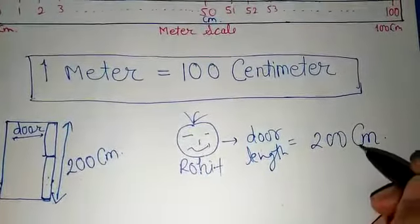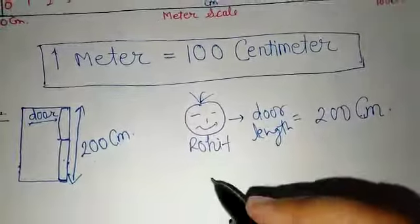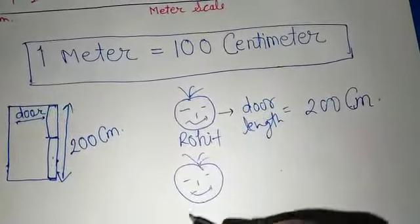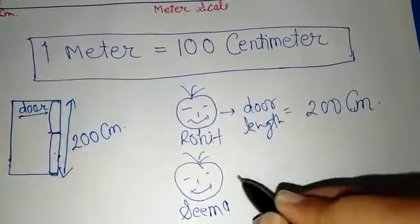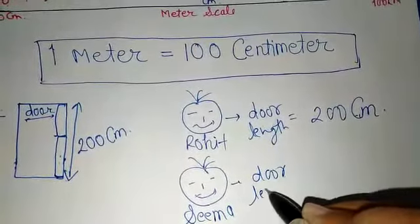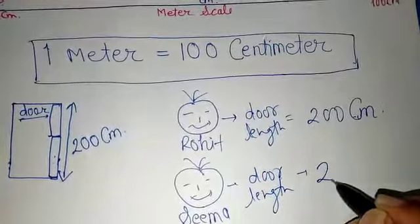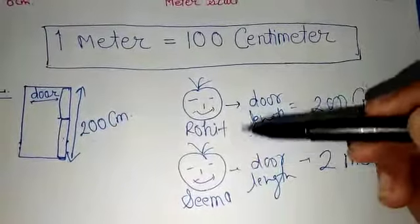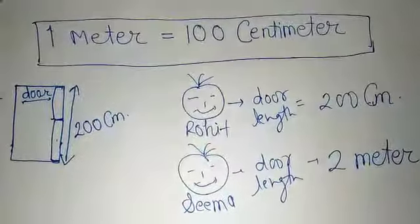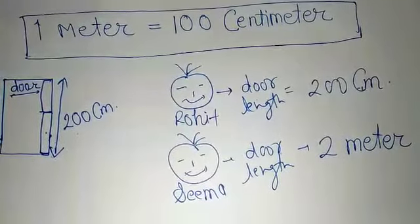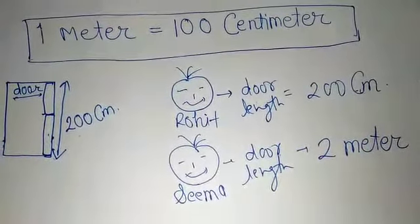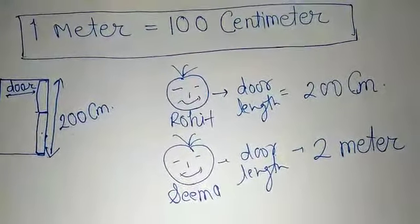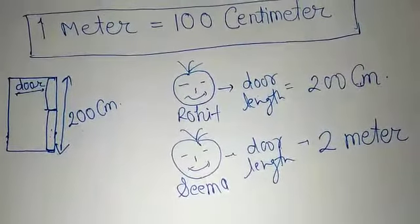The length of the door was 200 centimeters. Then another student, Sima, raised her hand and said, 'Ma'am, my door's length is 2 meters.' Now see — both brothers and sisters live in the same house and measured the same door, but both gave different answers. Rohit said 200 centimeters; Sima said 2 meters. Students, tell me — who is right or wrong?